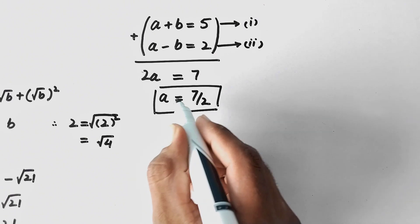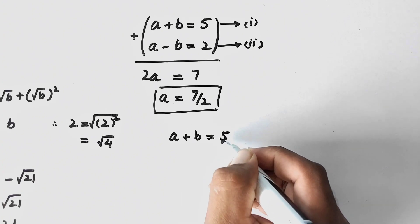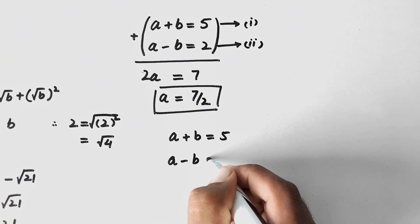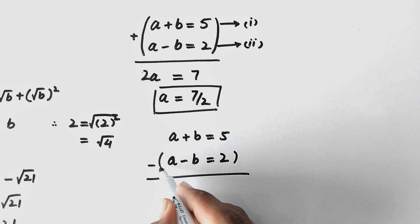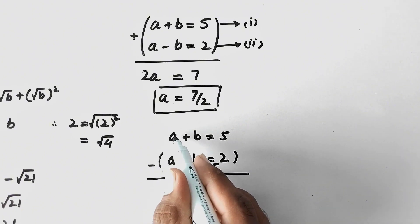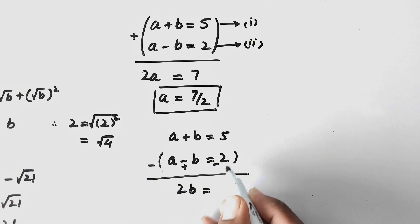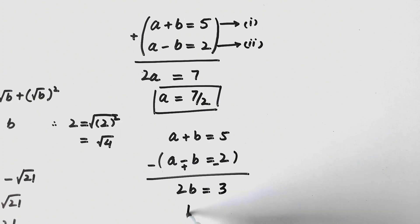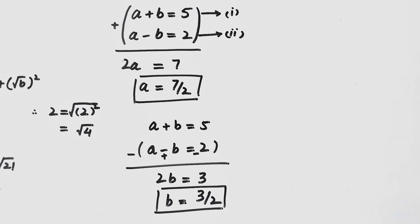To find the value of B, we subtract equation 2 from equation 1. A + B minus (A - B) gives 2B = 5 - 2 = 3, so B = 3/2. Now we will verify these values of A and B.